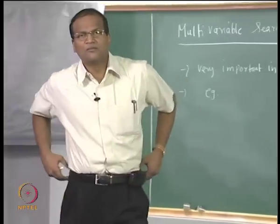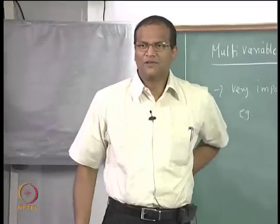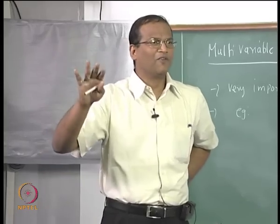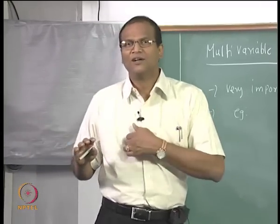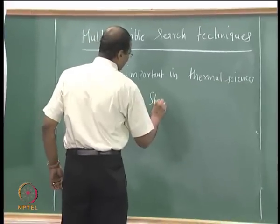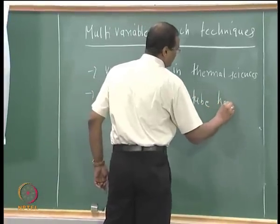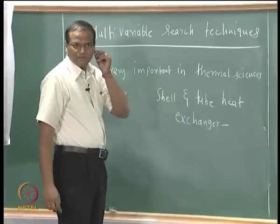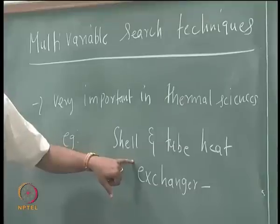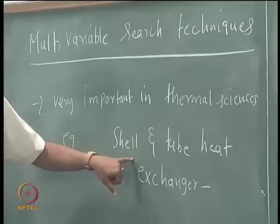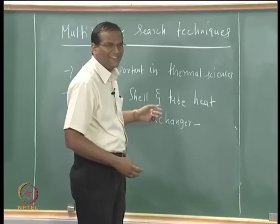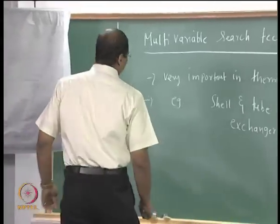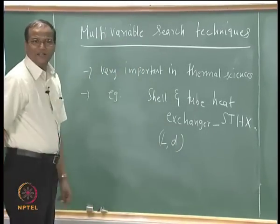Can you give an example of a two-variable optimization problem in thermal sciences — in heat transfer? A heat exchanger. What are the two variables if we consider a shell and tube heat exchanger? If the number of tubes is fixed, then length and diameter of the tube are the two basic parameters. The shell and tube heat exchanger — L and D are the important parameters.